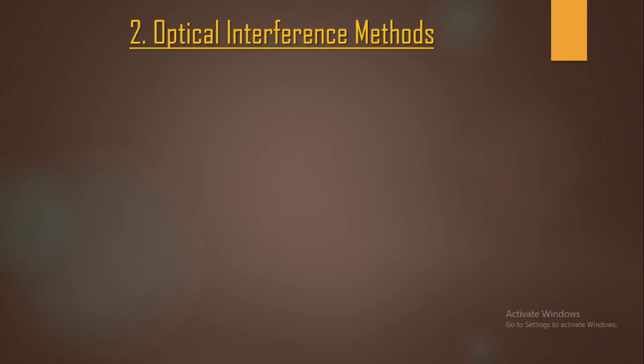In optical interference, we need light — referred to as 'optical' — and interference is the phenomena taking place, which is nothing but superposition. There are several methods for determining the optical constants of films which involve thickness as a parameter. These optical constants and thickness are interrelated, and if optical constants are known then thickness can be easily calculated using certain relations.